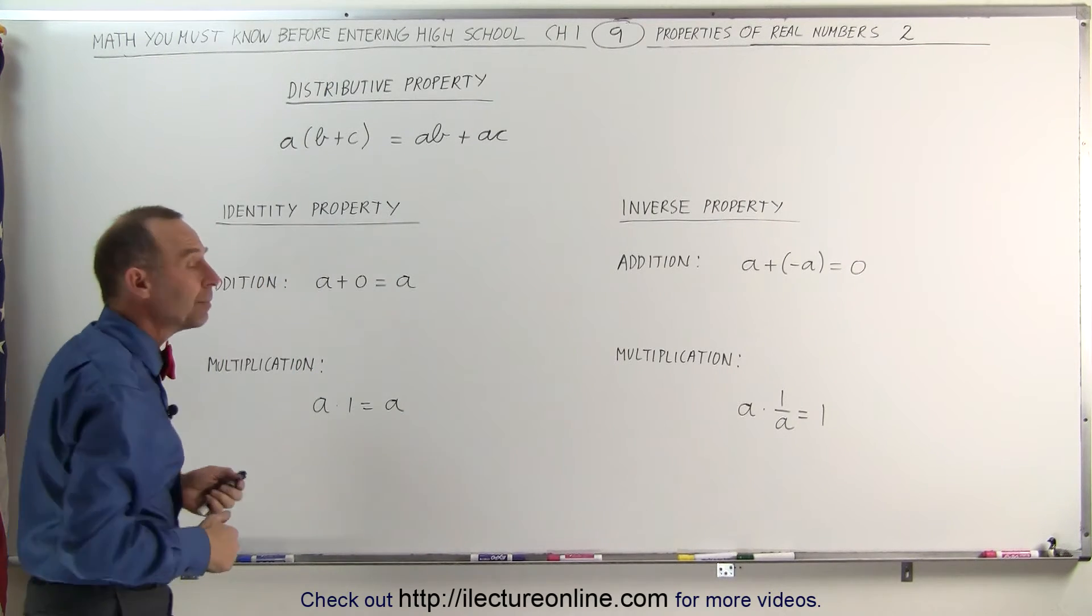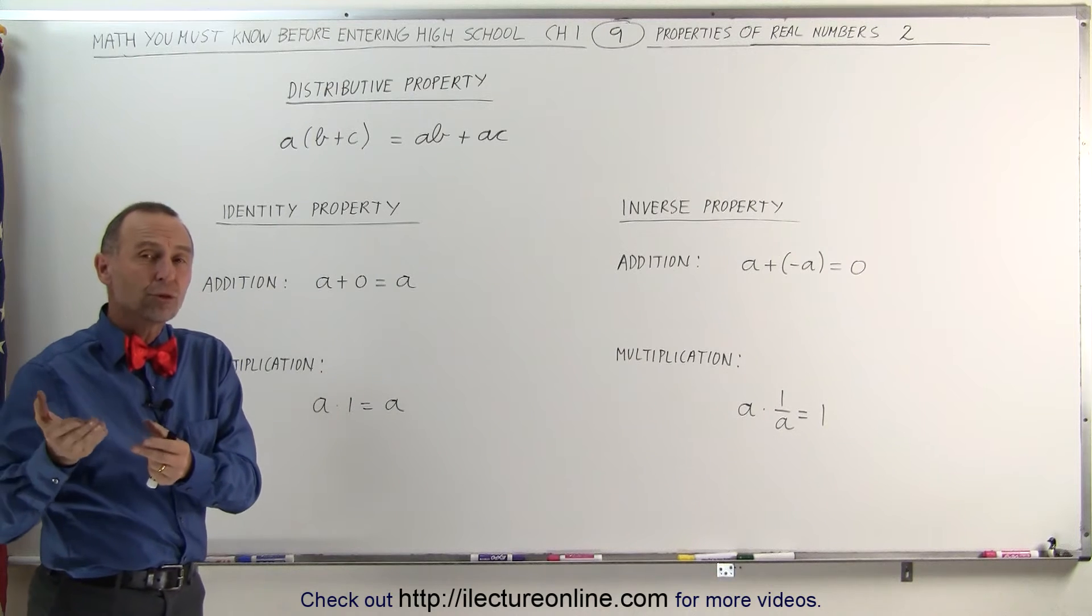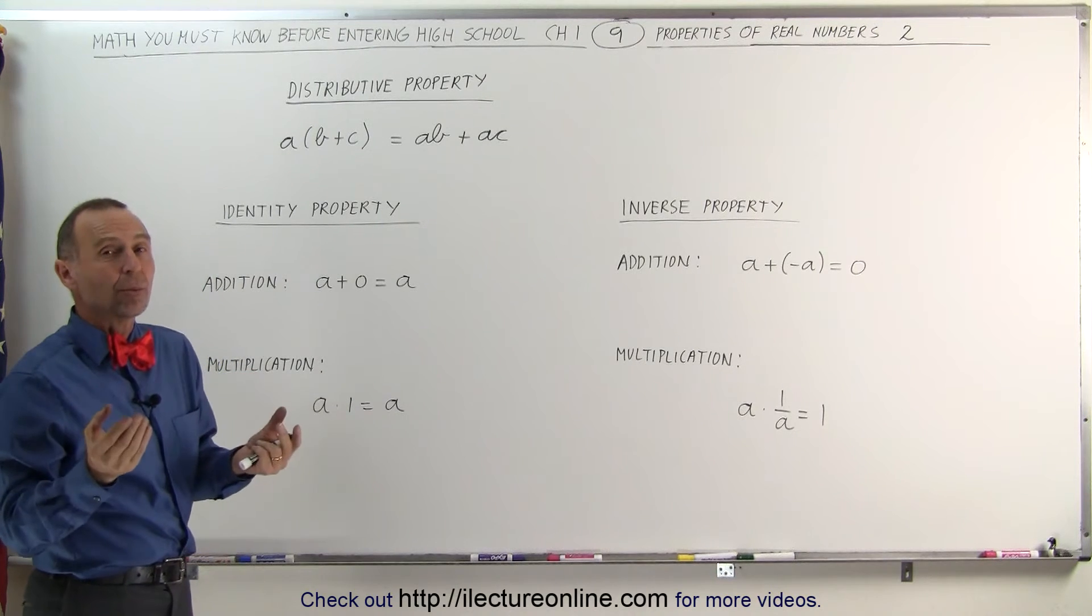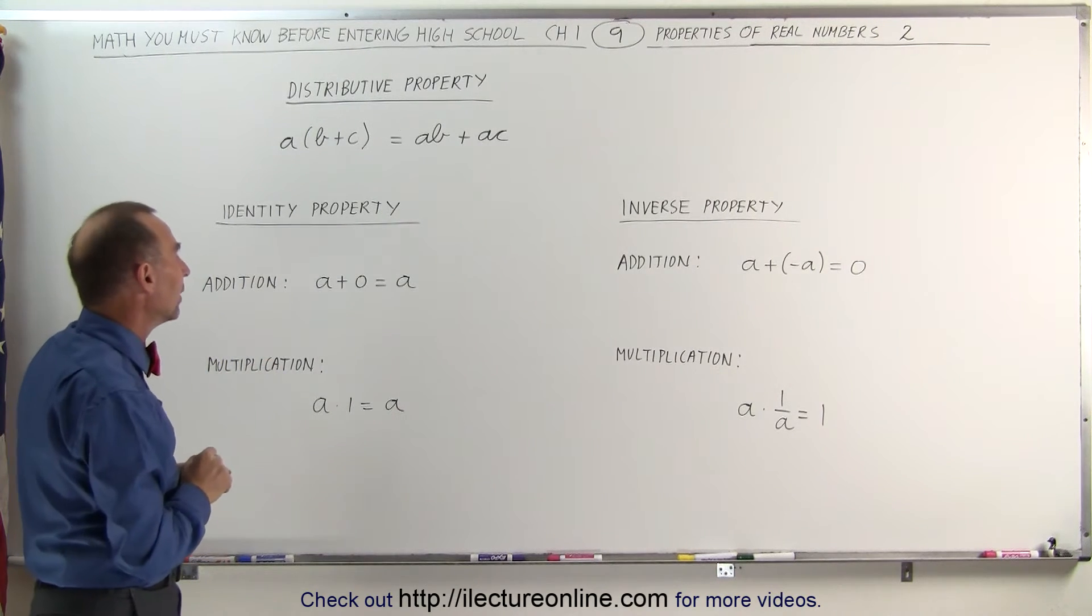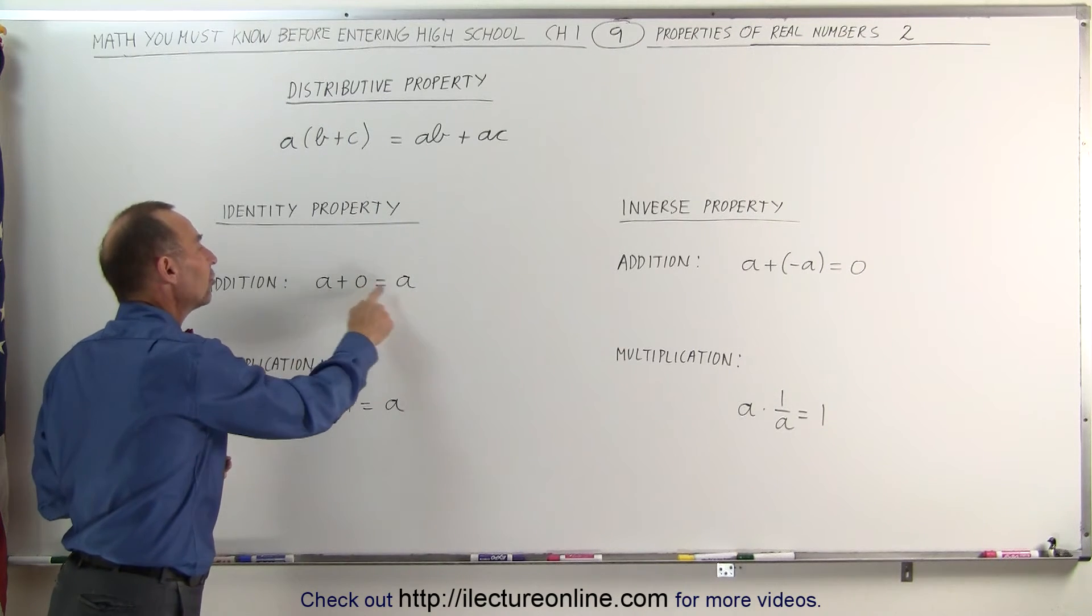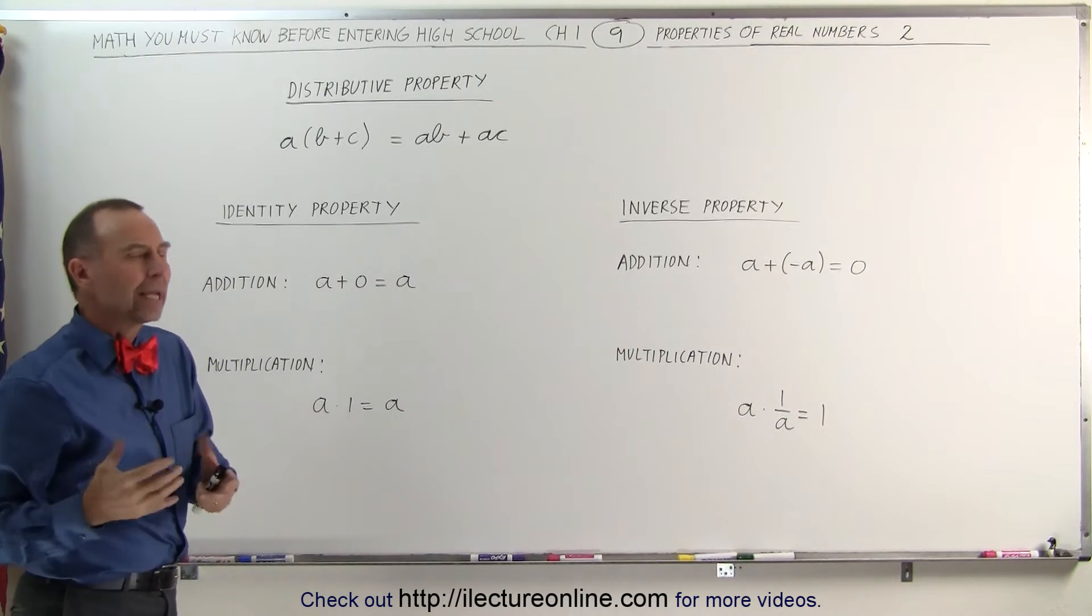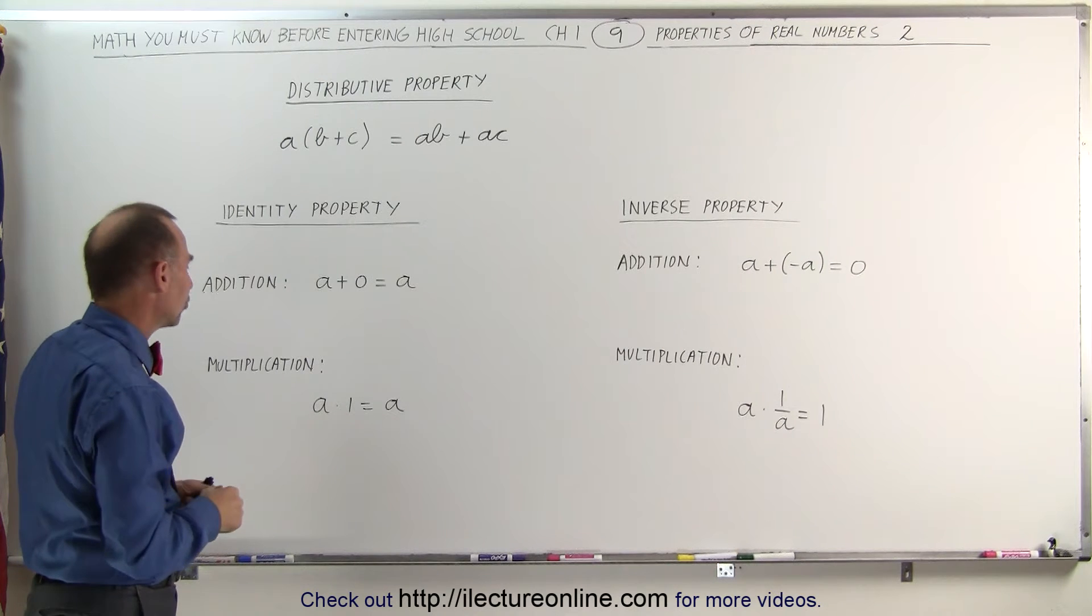The identity property means that if we can add a number to an original number and not change the number, that's called the identity property. In other words, we can add 0 to A and still end up with A. That's called the identity property for addition.